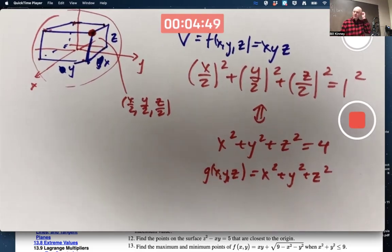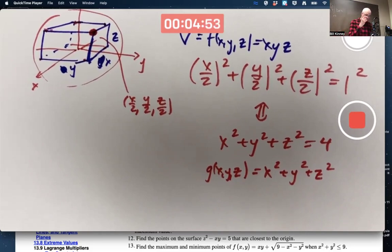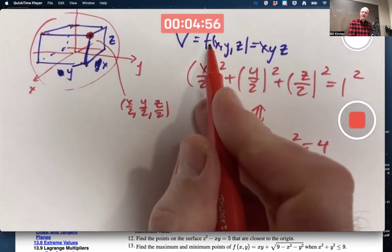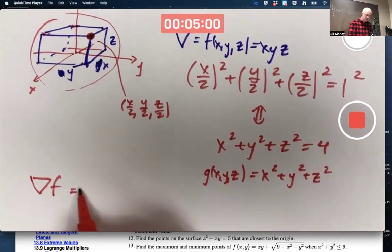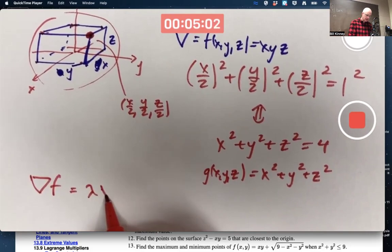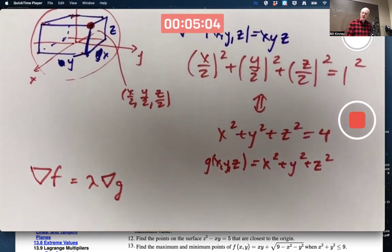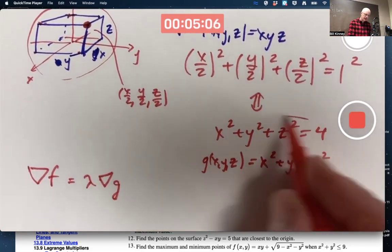But you want to use Lagrange multipliers to solve for where this function is going to be maximized subject to this constraint. You've got this equation. That needs to be true. You also want the constraint equation to be true. You also want this to be true.